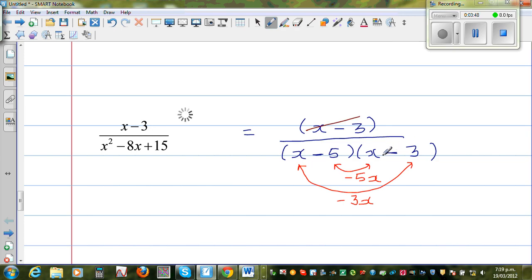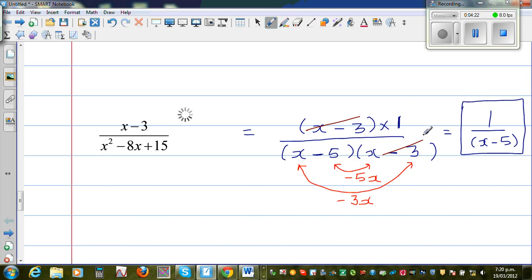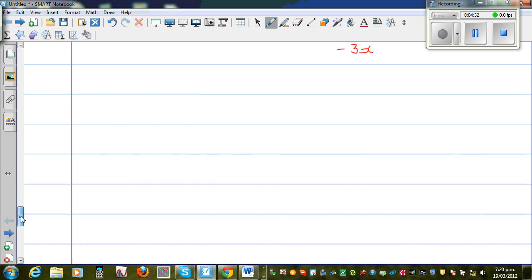So this and this gets cancelled. Now this is where you may struggle. Can I write the numerator x minus 3 times 1? Because the numerator can be written as x minus 3 times 1. So this and this gets cancelled. So the answer would be 1 over x minus 5. This is where some students find difficulty. They don't understand where the 1 came from. 1 is always there. It's a very humble number. 1 will appear only when it is necessary. So this is 1 which has come from here.